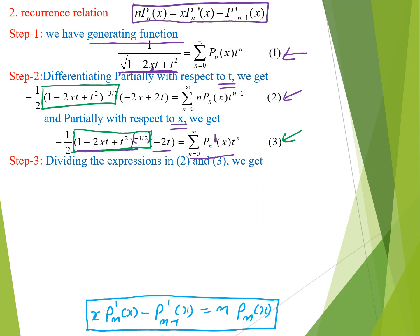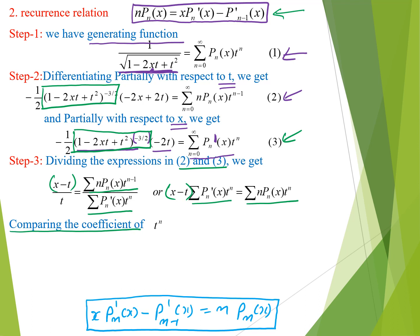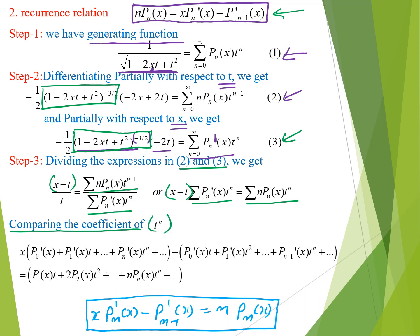Dividing equations 2 and 3, we get the relation: (x - t)/t times the summation of P_n t^{n-1} equals the summation of P_n'(x) t^n. Expanding gives x minus t multiplied into the full summation of P_n'(x) t^n. We then compare coefficients of t^n on both sides to prove the recurrence relation.